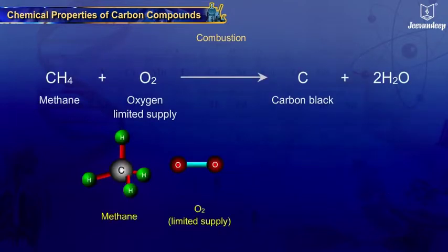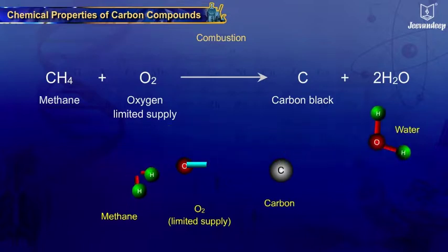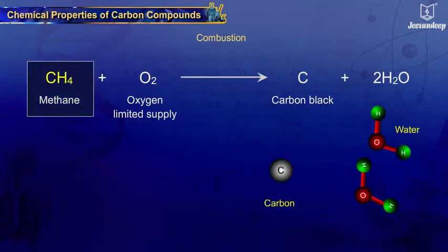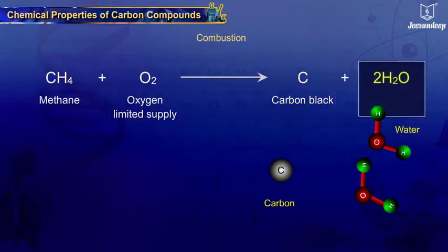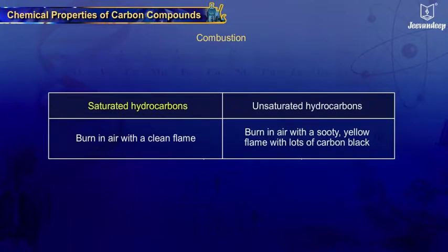Incomplete combustion of hydrocarbons gives carbon monoxide, and in a very limited air supply, carbon black is formed from methane. Saturated hydrocarbons burn in air with a clean flame, whereas unsaturated hydrocarbons burn with a sooty yellow flame with lots of carbon black.